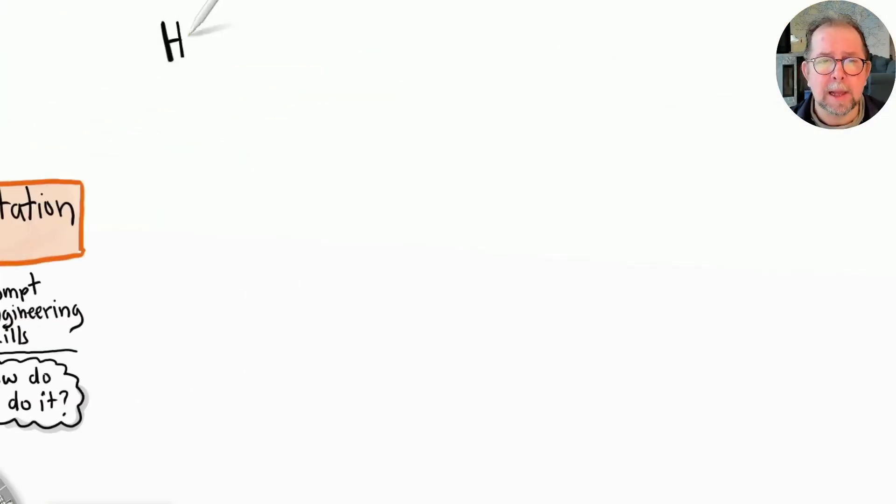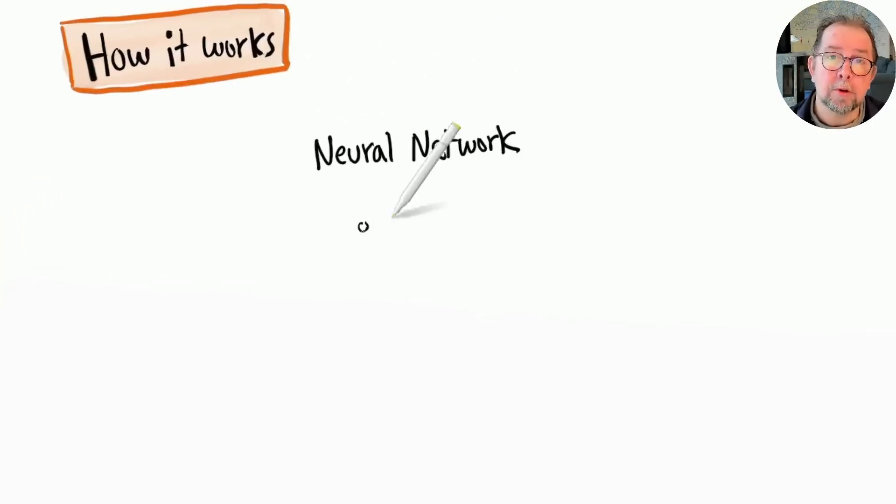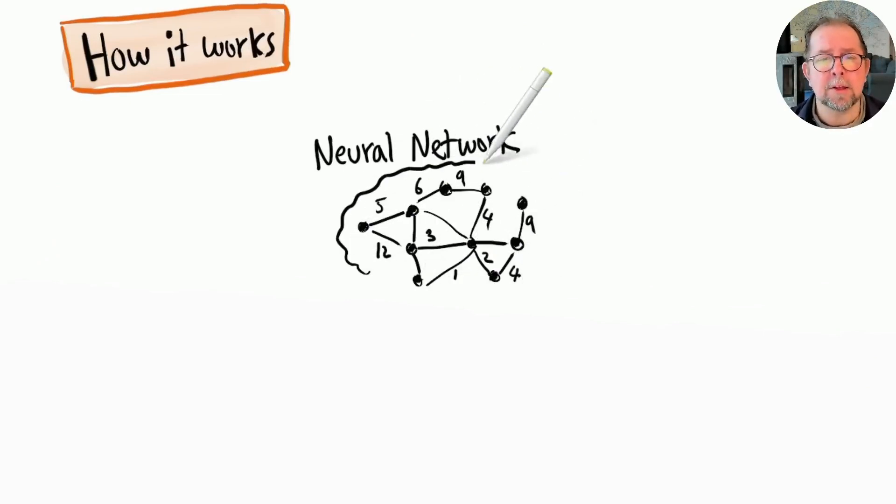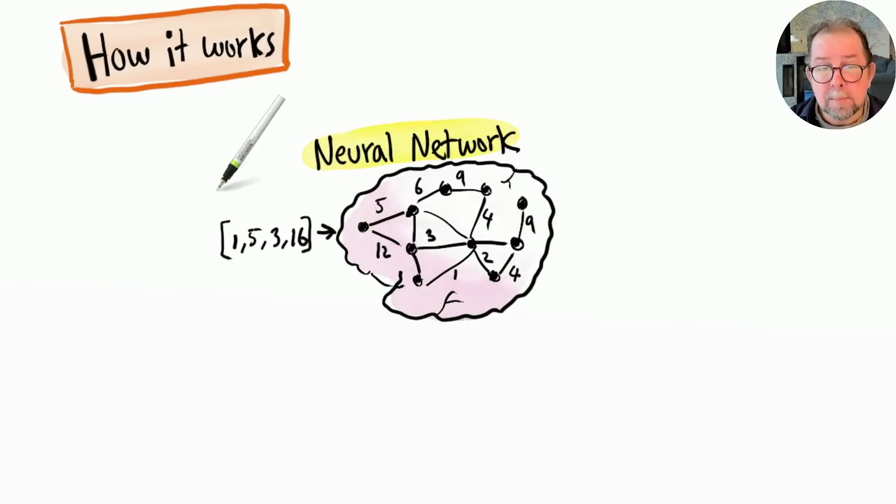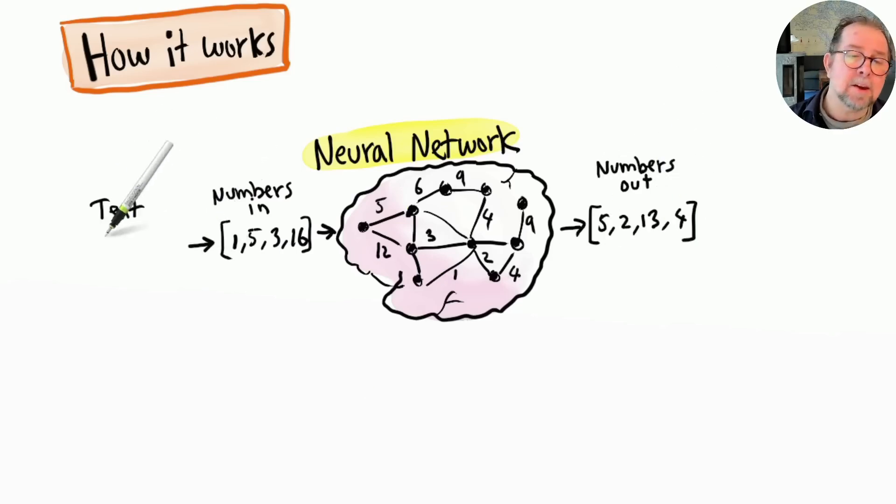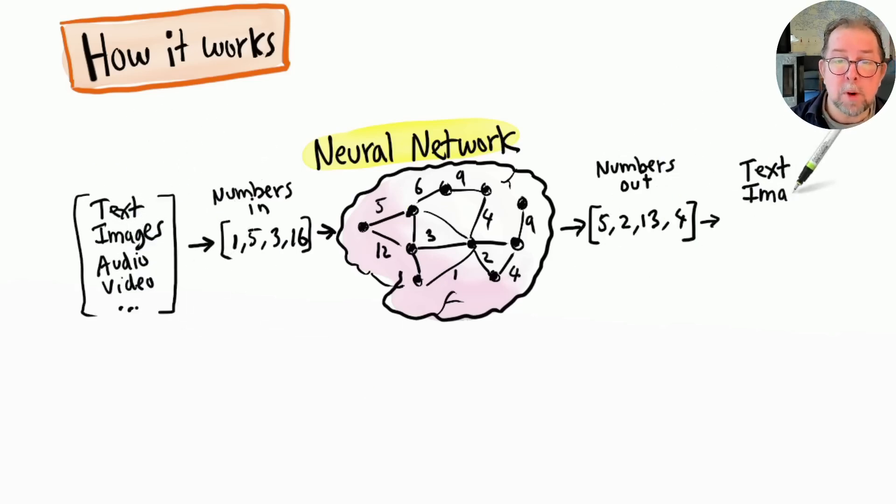So how does it actually work? Well, a large language model is an artificial neural network - basically a bunch of numbers or parameters connected to each other, similar to how our brain is a bunch of neurons or brain cells connected to each other. Neural networks only deal with numbers. You send in numbers, and depending on how the parameters are set, other numbers come out. But any kind of content, such as text or images, can be represented as numbers.